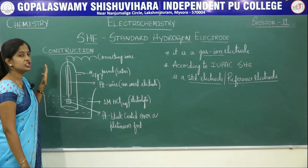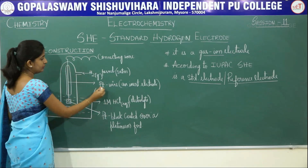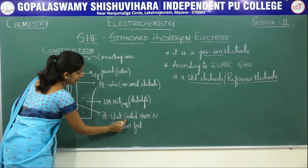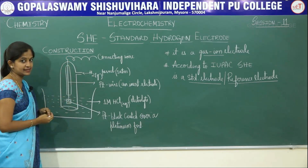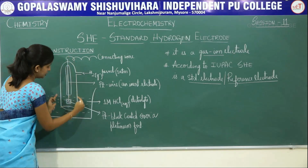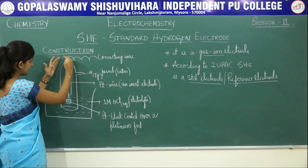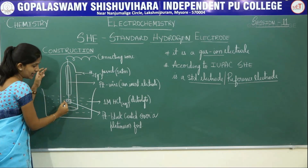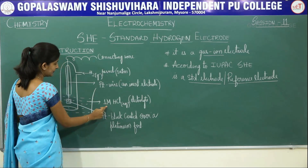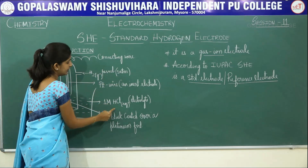Now the construction of SHE, that is Standard Hydrogen Electrode. You have to take a platinum wire which acts as an inert electrode — platinum is a stable metal so it acts as an inert electrode. To this you will be attaching platinum black coated over a platinum foil. This whole thing acts as an electrode connected to a circuit through a connecting wire. It is enclosed in a glass tube which has an inlet wherein hydrogen gas can be passed through it. This whole setup — the glass tube as well as the electrode with platinum black coated platinum foil — is immersed in an aqueous HCl solution of concentration 1 molar, and into this inlet hydrogen gas is passed at 1 atmospheric pressure.